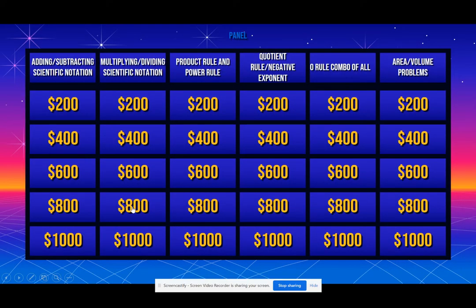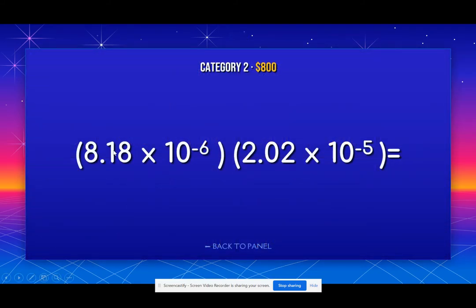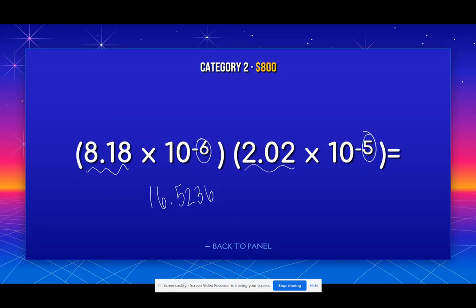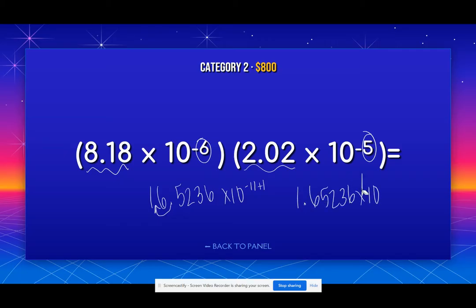Now let's move on to multiplying and dividing scientific notation. When I multiply, I have to multiply my two big numbers — so 8.18 and 2.02. If I multiply 8.18 times 2.02, I get 16.5236, and then we add our exponents: negative 6 and negative 5 gives me negative 11. This number has to be between 1 and 10, so I have to move the decimal place over to the left. When you move it to the left, you add one to the exponent, giving me 1.65236 times 10 to the negative 10th power. That is my final answer. We have to be careful that our factor is between 1 and 10.